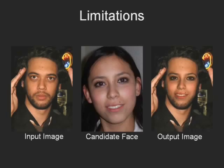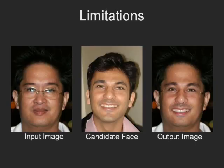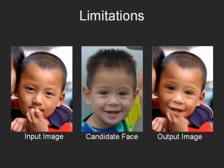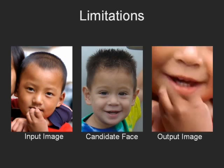Here we show a few results that highlight the limitations of our system. In this example, the input and candidate images correspond to different genders, since we do not enforce gender consistency. In this case, our system was not able to find a replacement candidate with similar eyeglasses. Here the input image is significantly occluded by the hand, causing strong artifacts in the result.